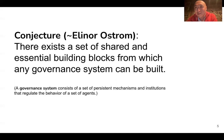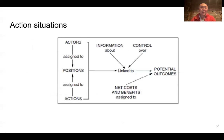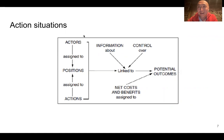The conjecture from Eleanor Ostrom and her collaborators at the Ostrom Workshop at Indiana is that there exists a set of shared and essential building blocks from which any governance system can be built. When I say governance system, I mean a set of persistent mechanisms and institutions that regulate the behavior of a set of agents. For Ostrom, those primitive building blocks were actions, or what she called action situations. Action situations are already a certain kind of modular architecture or way of thinking about a given social situation — breaking it down into things like actors and positions, costs and benefits, and potential outcomes.